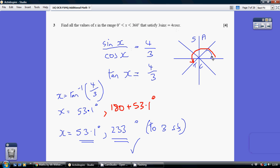Tan is positive in this first quadrant and this third quadrant, so our second solution comes from 180 plus 53.1 which is 233 to 3 significant figures.